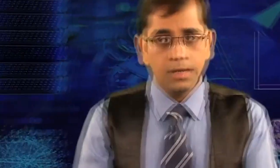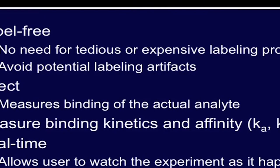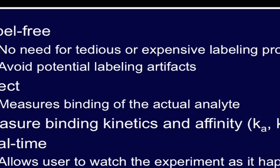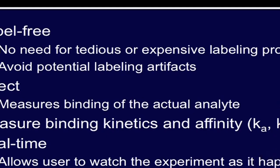There are many advantages of using SPR. First of all, it is a label-free method, so there is no need to add tags by following tedious labeling methods. It avoids artifacts due to labeling. It is a direct method because it provides measurement of binding of the actual analyte. It provides information in real time as the experiment proceeds; therefore it is not an end-point assay, unlike other label-based detection methods. And most importantly, it gives you a measure of binding kinetics and affinity — the on-rate, off-rate, and dissociation constant.